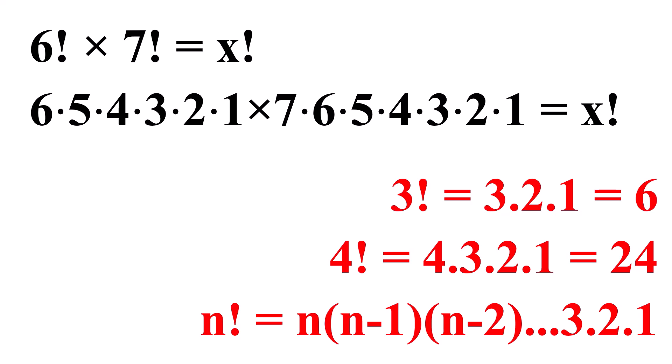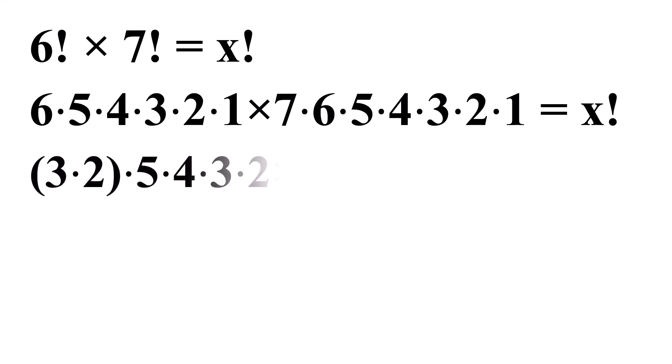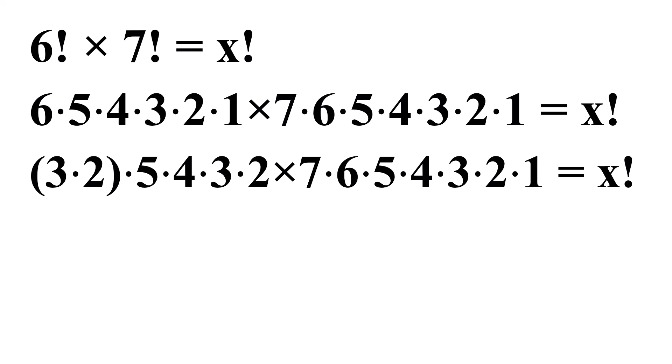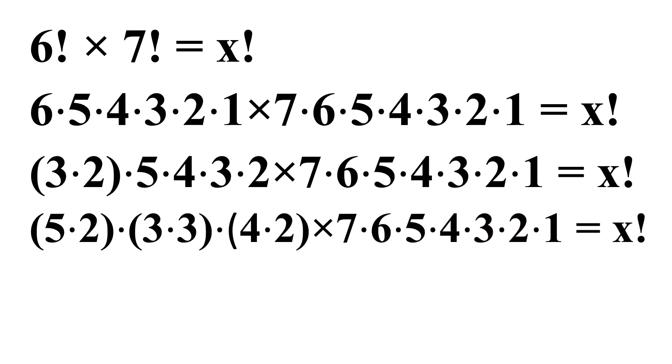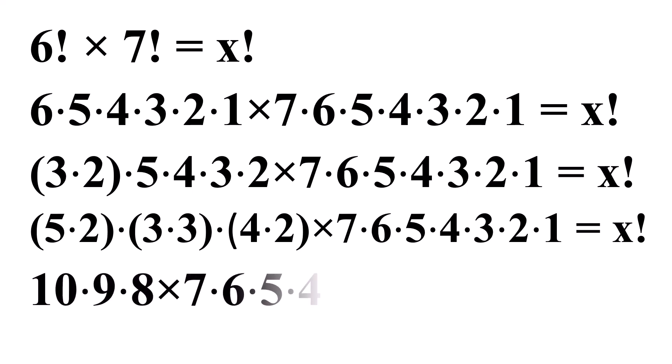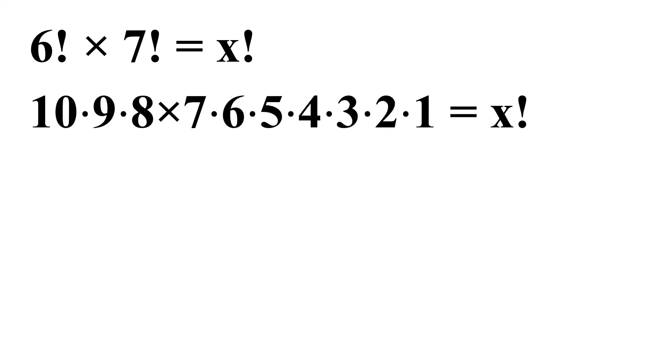Again, we can write 6 as 3 times 2. Rearranging and simplifying the product of all these terms, we get 10 times 9 times 8 times 7 times 6 times 5 times 4 times 3 times 2 times 1 equal to x factorial.